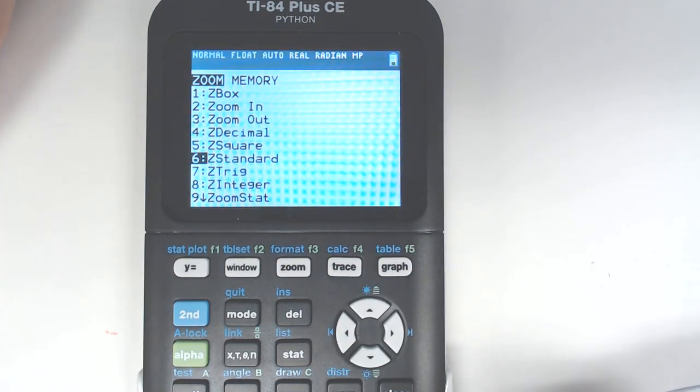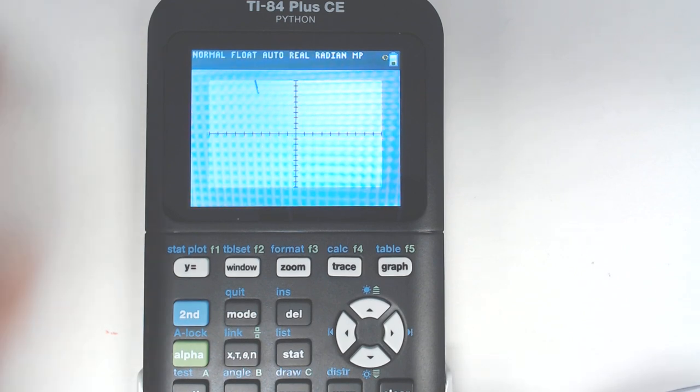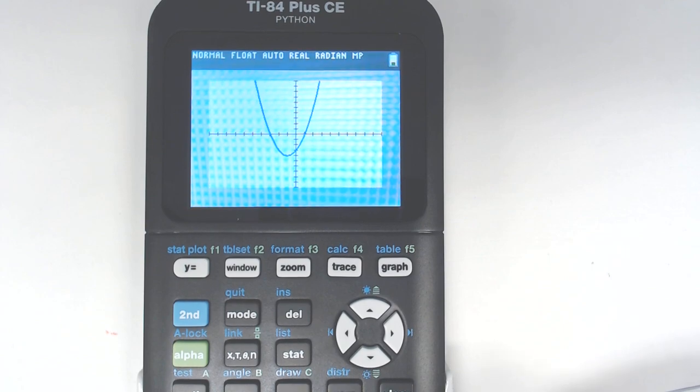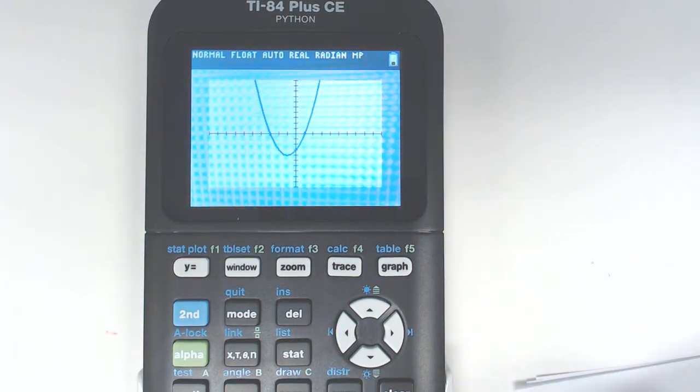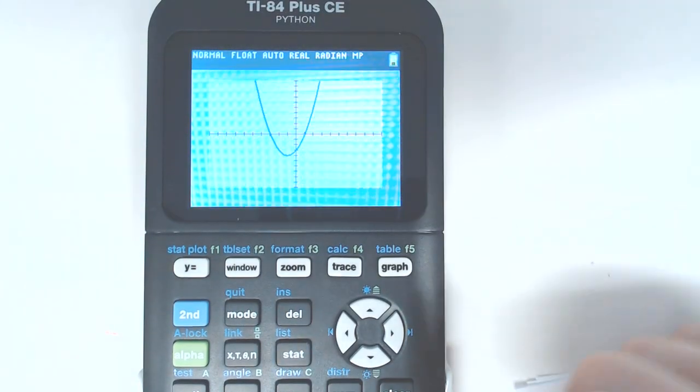So I would recommend any time you get to a new graph, you hit zoom standard, which is zoom 6. So you can hit the number 6, and it would actually type it as well. Or you can scroll down there to standard. So I would start every graph out with the 6x6, like standard 10x10 zoom.